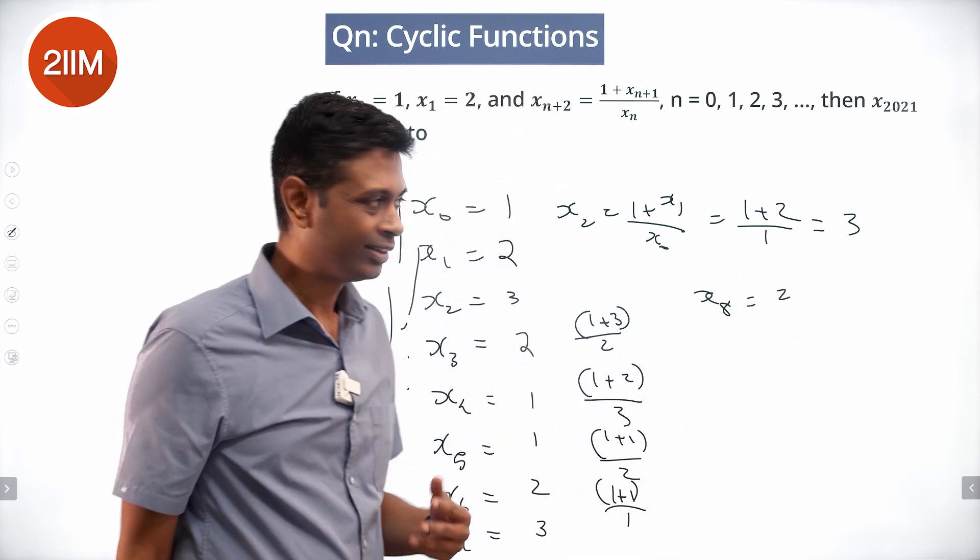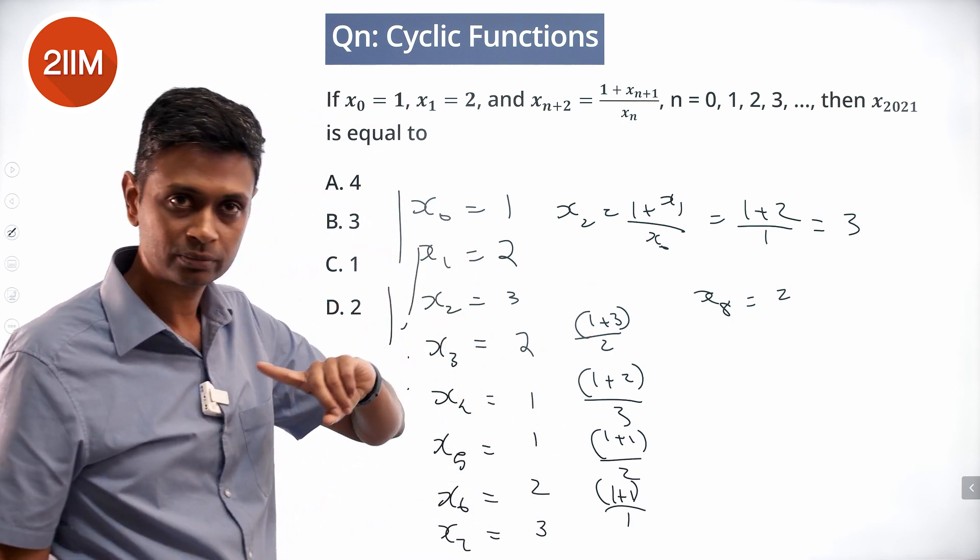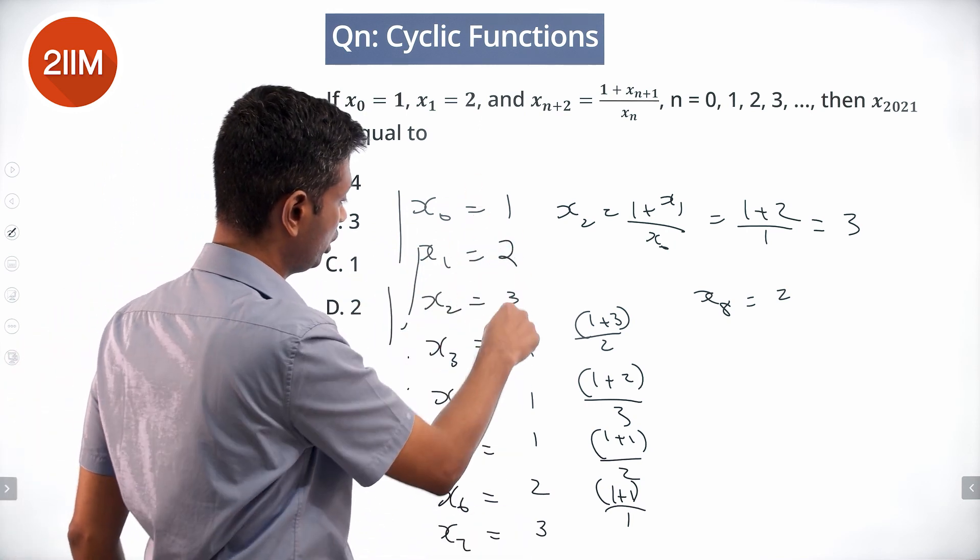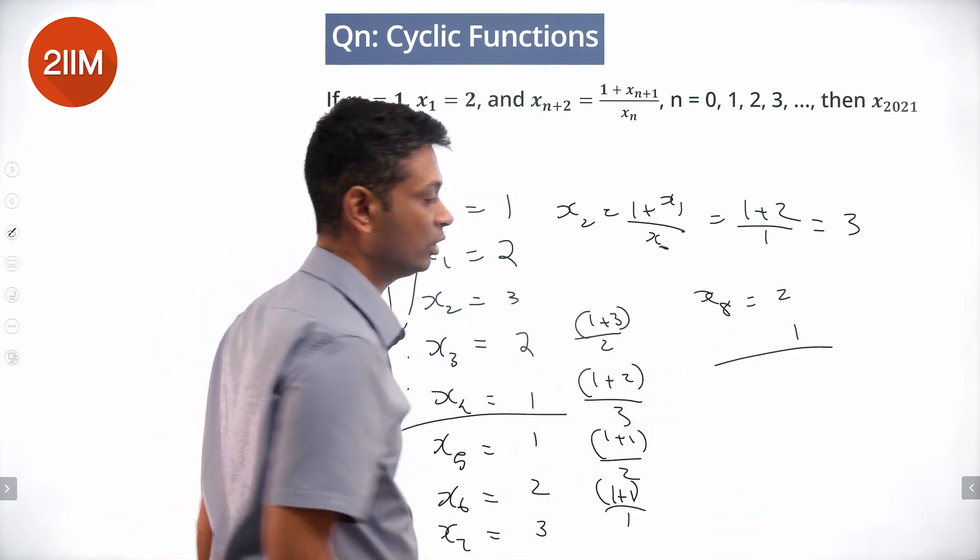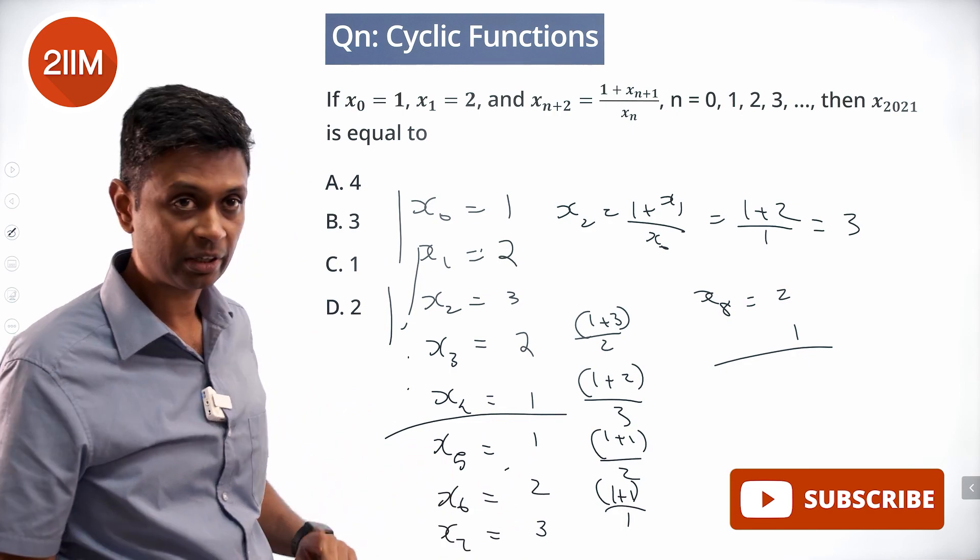The sequence is 1, 2, 3, 2, 1, then 1, 2, 3, 2, 1 repeating. The moment I have a 1, 2, everything else will repeat.